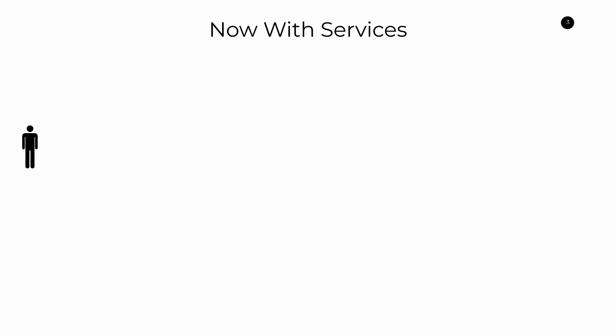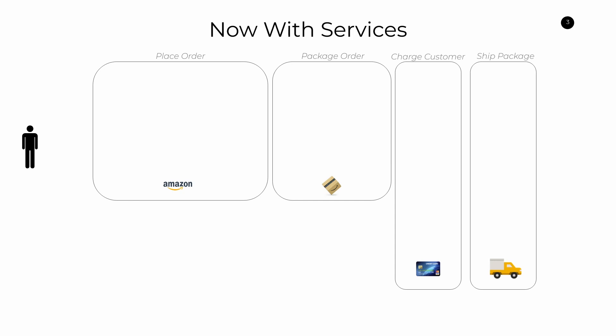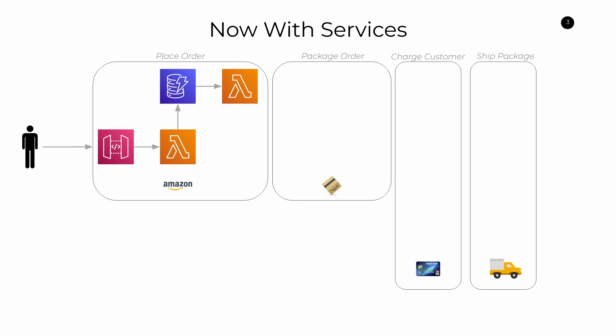Now with AWS services — it starts with us as the user. I wanted to draw out the bounding boxes of those four steps: the placing of the order, the packaging of the order, the charging of the customer, and the shipping of the package. So what AWS services may we use? First we start with API Gateway — a customer invoking an endpoint to place an order. That triggers a serverless Lambda function, which saves the state of that order, maybe creating a new entry in a DynamoDB table. That DynamoDB table may trigger another Lambda function as a result of change events, and it's going to broadcast the fact that an order was placed out to other services using an SNS topic.